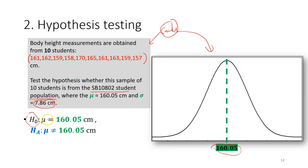For the null hypothesis we use an equal sign, and for the alternative we use not-equal. If the null hypothesis is true we accept it; if it is not true, we accept the alternative hypothesis instead.